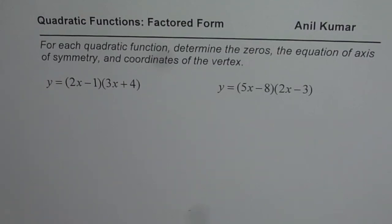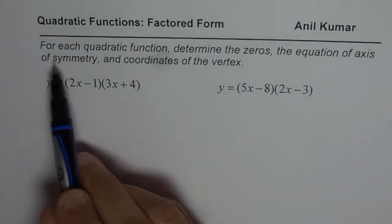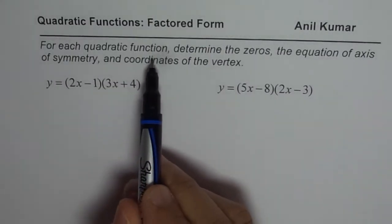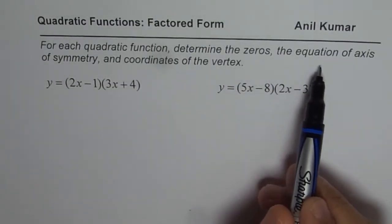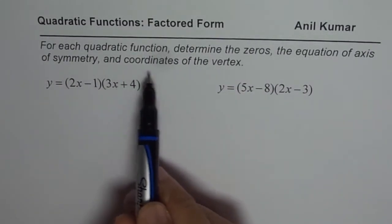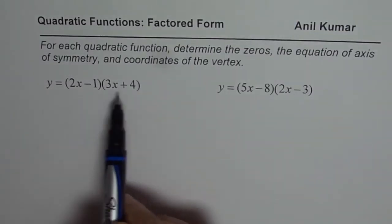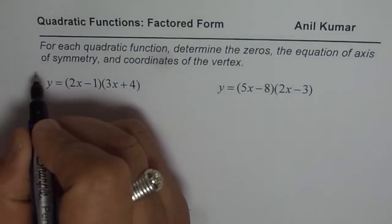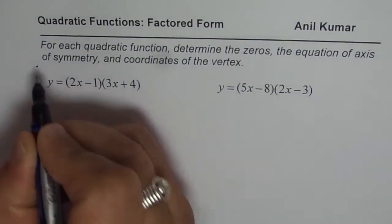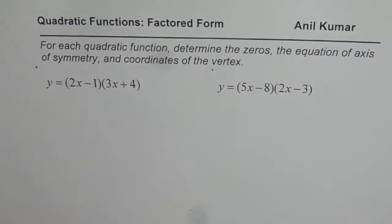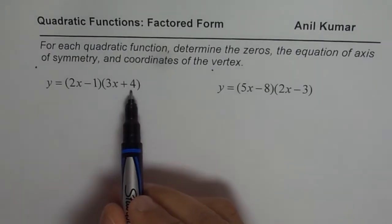I am Anil Kumar and now we will practice further how to find characteristics of quadratic functions when given in factored form. The question here is, for each quadratic function, determine the zeros, the equation of axis of symmetry and coordinates of the vertex. So we have two different functions here. I will do one of them for you, the other one is for you to practice. The first one is y equals to 2x minus 1 times 3x plus 4.